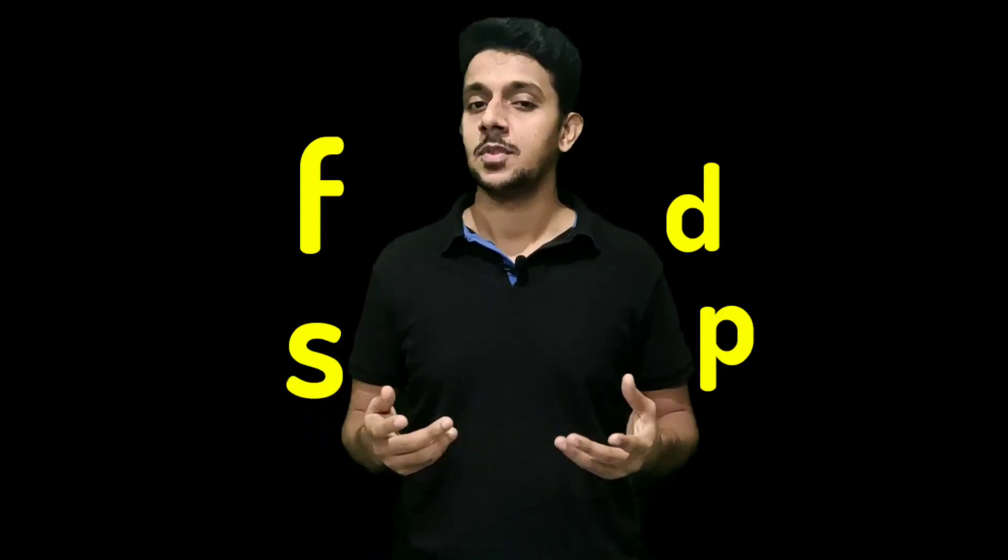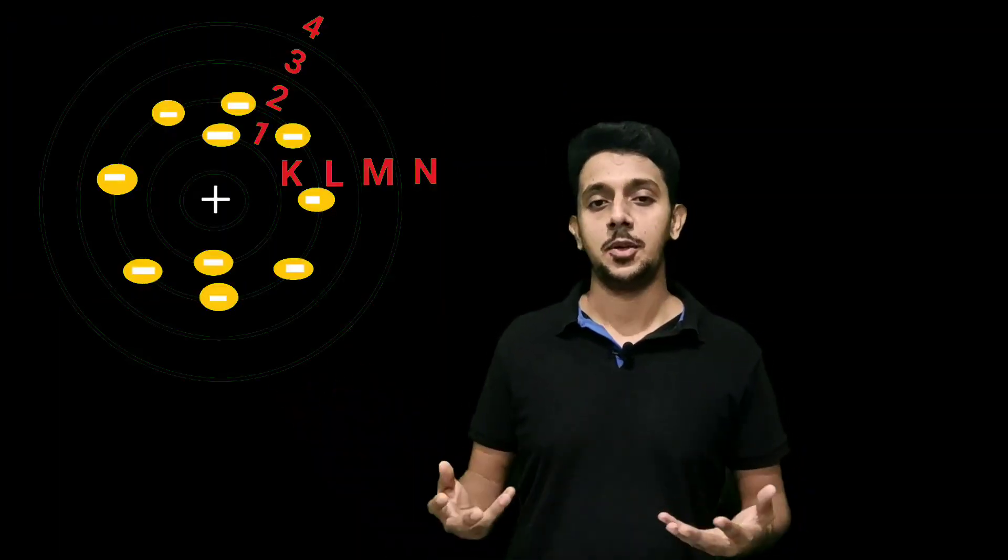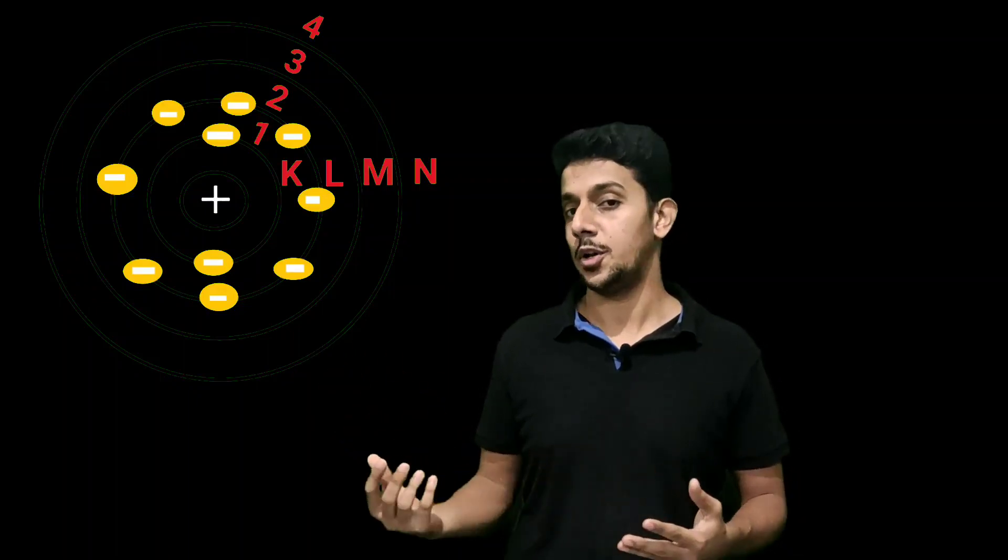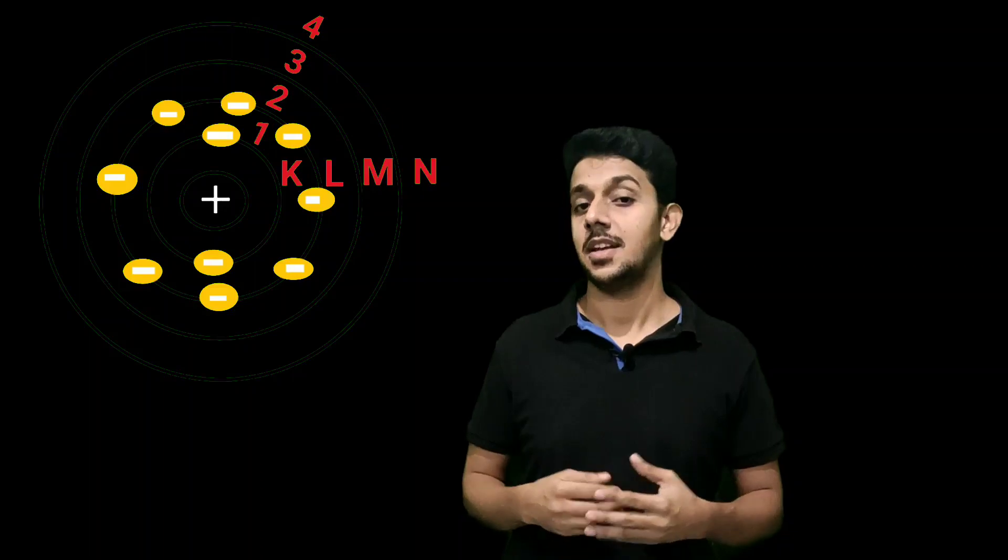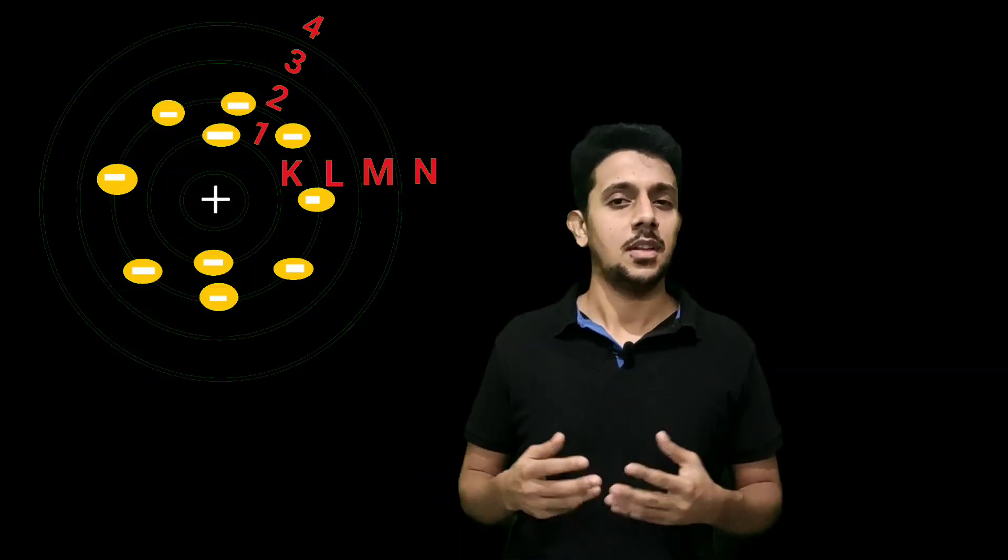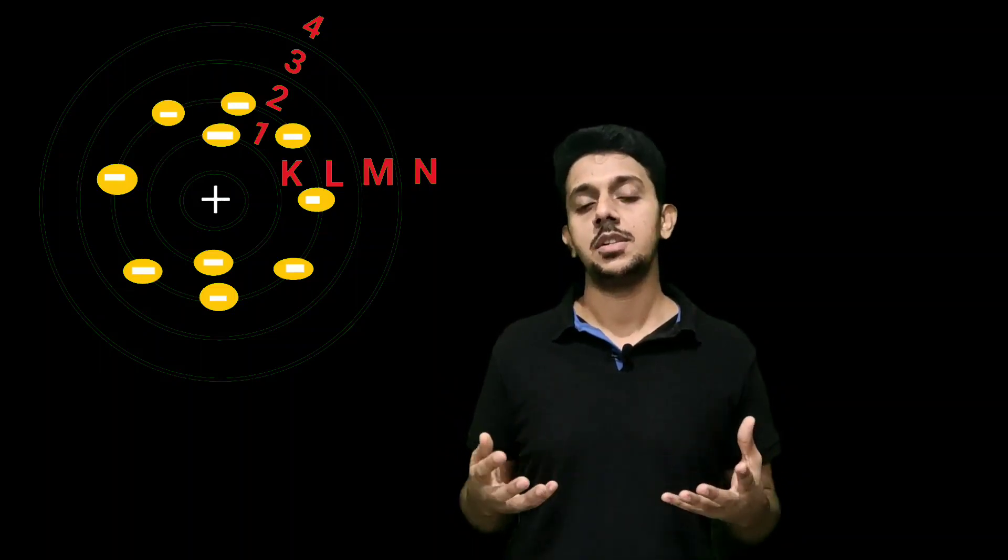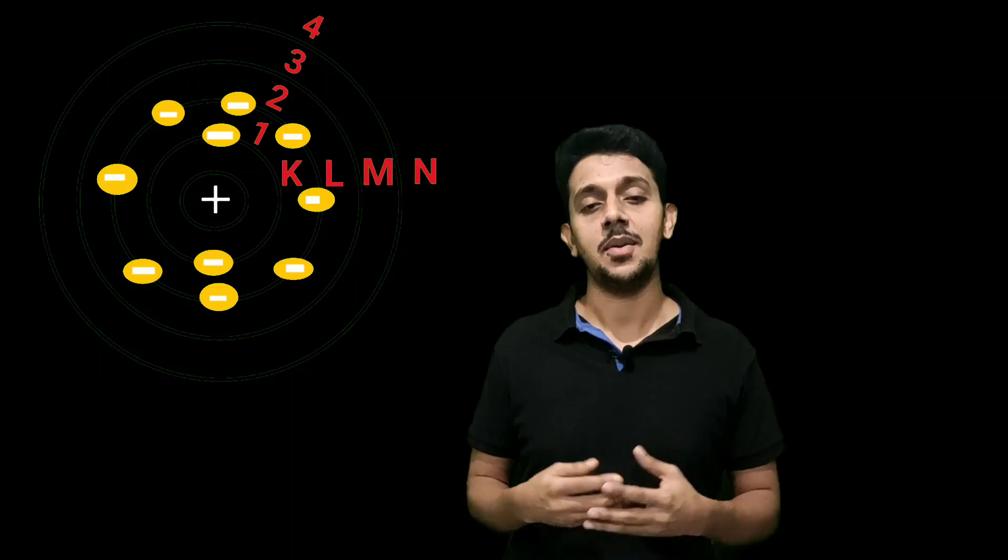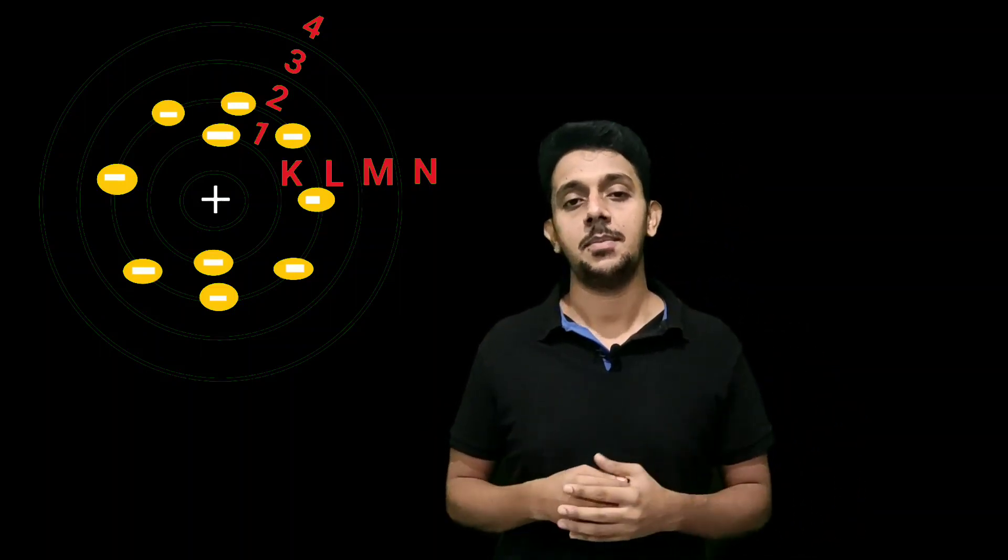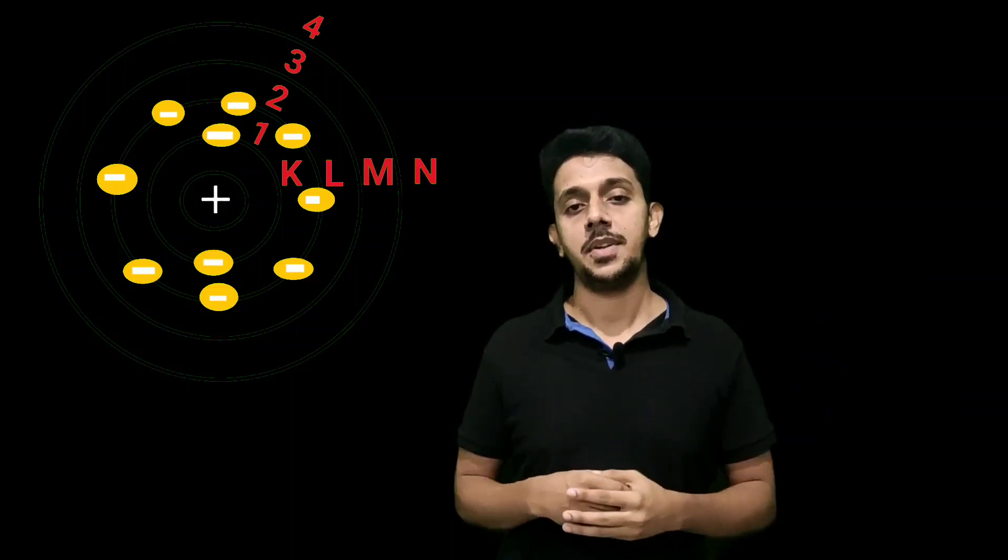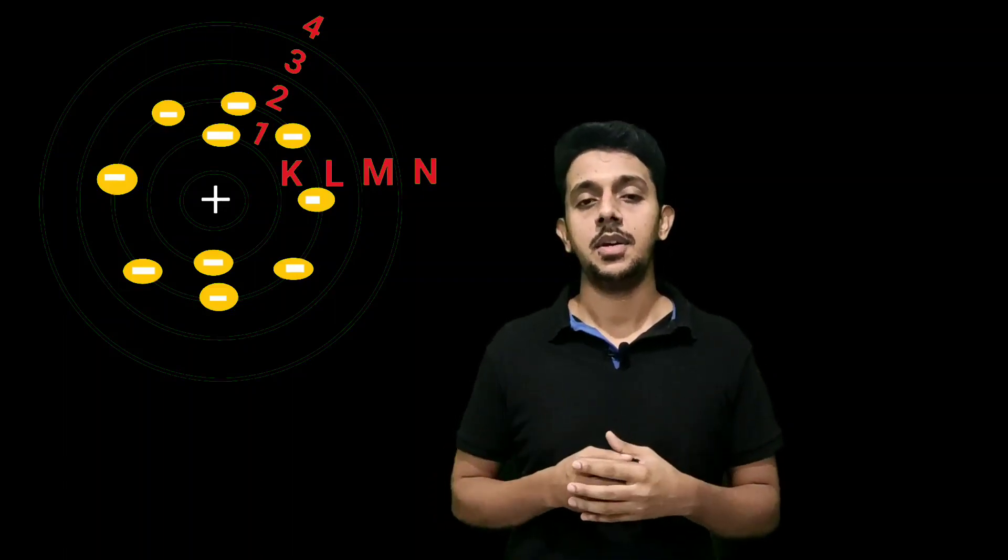You can look at the Bohr model of the atom. This is our Bohr model. You learned in 9th standard that the central part of the atom is called the nucleus - it consists of protons and neutrons. Protons have positive charge, neutrons have no charge, so the nucleus is positive. The electron is a negatively charged particle situated or distributed in shells around the nucleus. These shells are known as K, L, M, N, O, etc., and are also known as energy levels represented as E1, E2, E3, E4, etc.